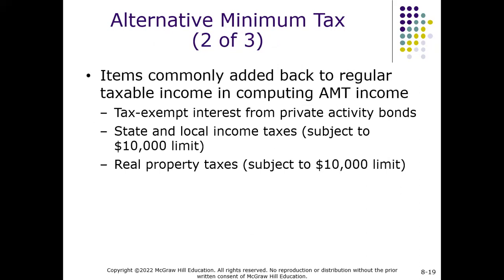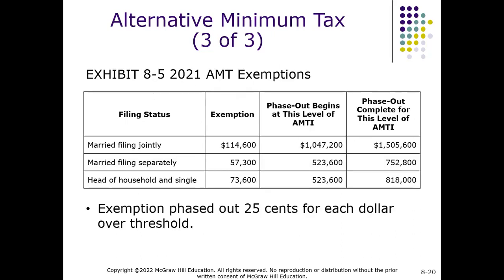Here are the items added back when computing alternative minimum taxable income: tax-exempt interest not yet in taxable income from private activity bonds; if you itemized, add back state and local income taxes and real property taxes. Once you get to your AMTI, you can subtract an exemption amount, assuming you're allowed to — it phases out over a range.